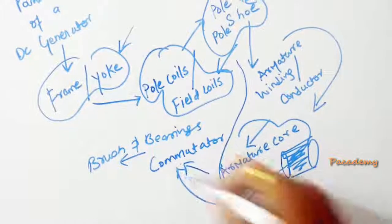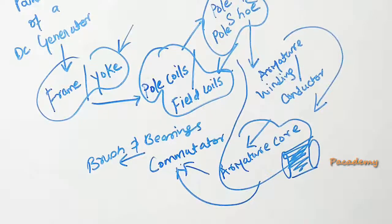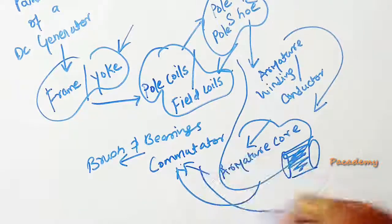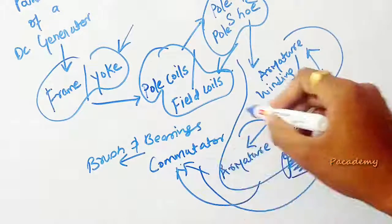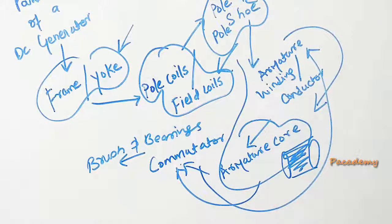Then there is the commutator which is placed on the shaft in such a way, connected to the armature conductor, to rectify the AC induced EMF in the conductor to DC.